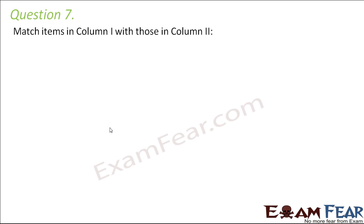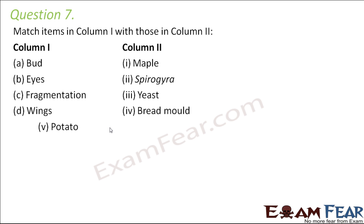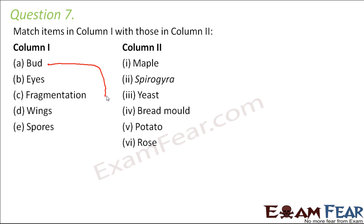Question number 7: Match items in column 1 with those in column 2. First is bud — budding happens in the case of yeast and Hydra. These are organisms where budding happens. A bud is a tiny outgrowth on the body of the organism, and that tiny outgrowth over a period of time grows to become a new organism.